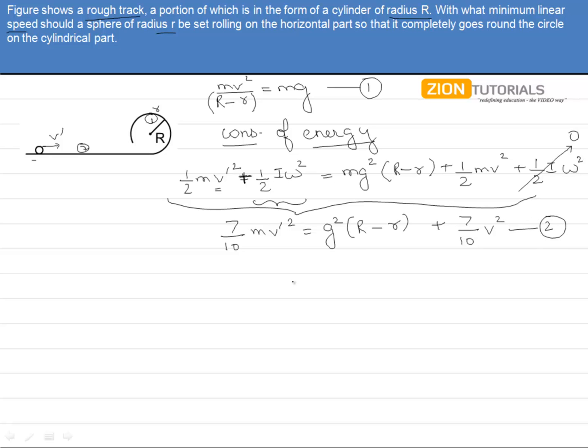We can get v'² equals to 27/7 g(R - r), giving us v'_minimum to be the square root of 27/7 g(R - r).